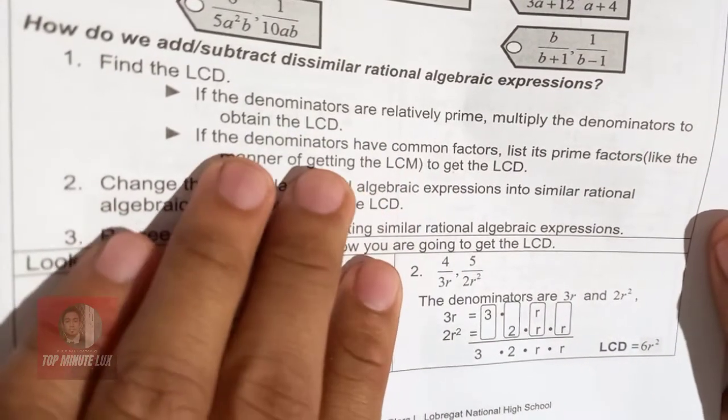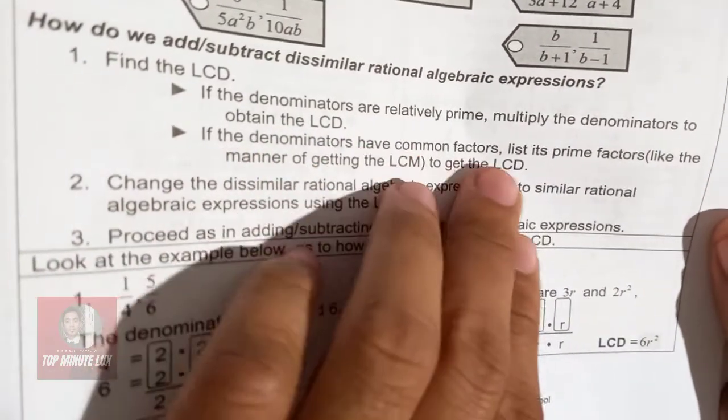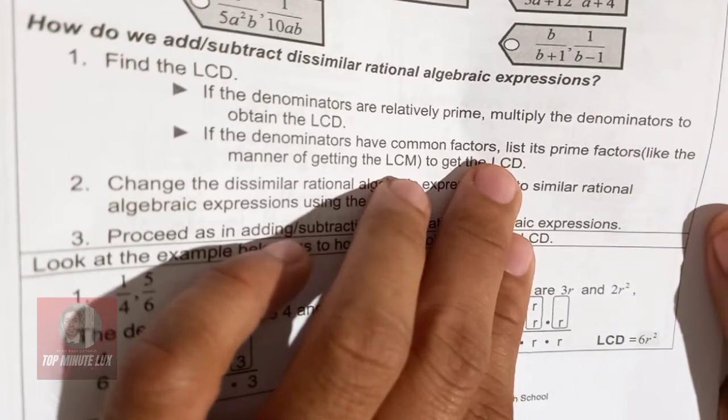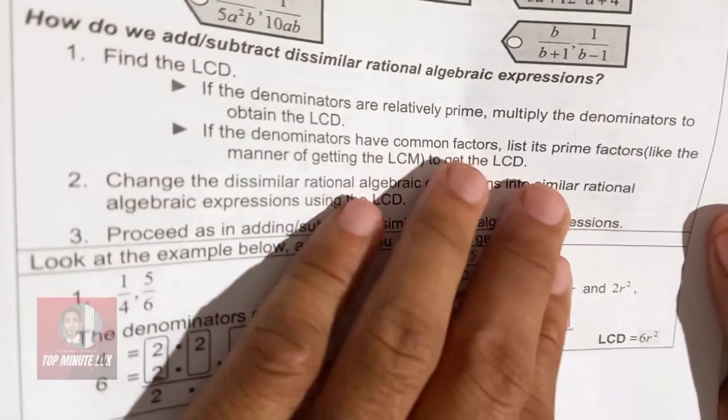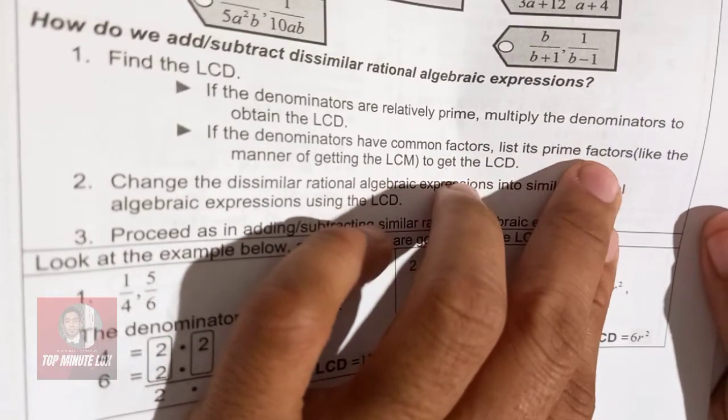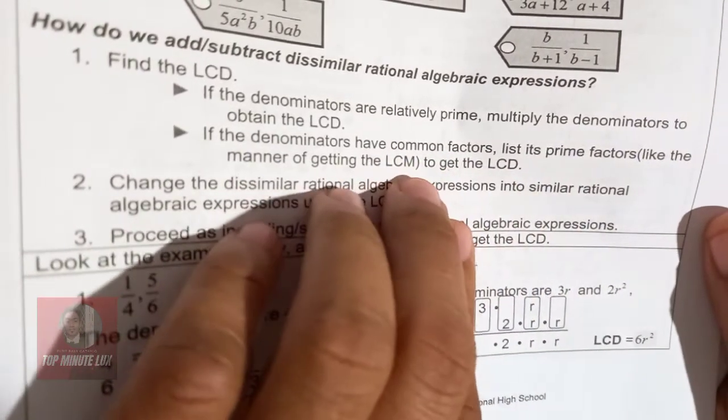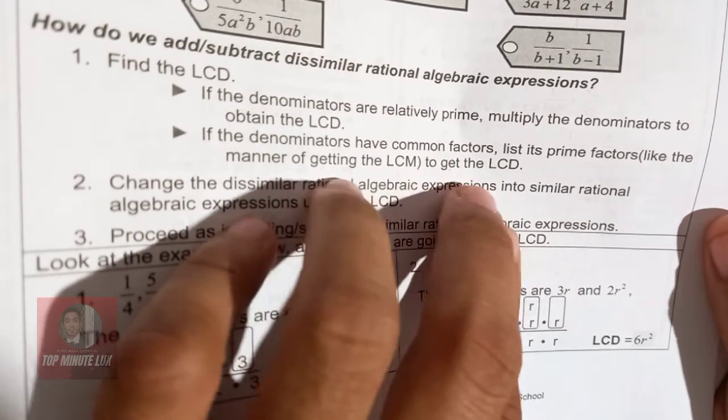Another rule is that if the denominators have common factors, it means to say numbers can still be factored. List its prime factors, like the manner of getting the LCM or the least common multiples to get the LCD.